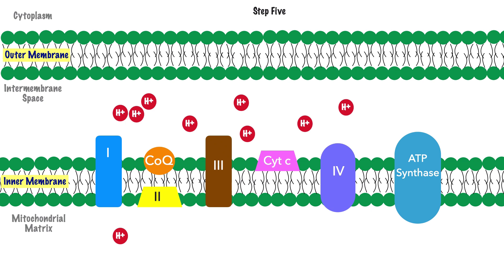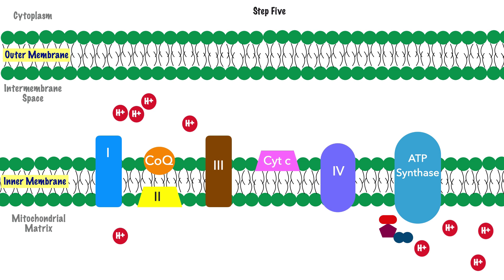Now that we've concluded the electron transport chain, the final piece is oxidative phosphorylation. With the sizable proton gradient between the intermembrane space and the mitochondrial matrix, we have the opportunity to create a large amount of ATP. ADP makes its way to Complex 5, the ATP synthase channel, which utilizes the proton gradient, causing protons to move down their concentration gradient from the intermembrane space — where they are higher in number — into the mitochondrial matrix. A chemical interaction between ADP and the protons generates a generous amount of ATP.